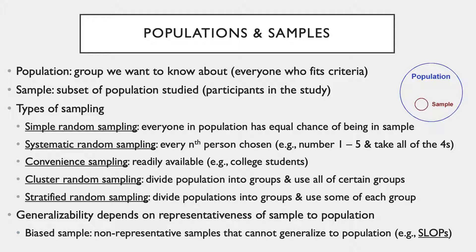Generalizability always depends on the representativeness of a sample to the wider population. A sample is generalizable only if it represents all members of the wider population, which is quite challenging to achieve. A representative sample is the term for a sample that represents the population of interest. In contrast, biased samples are non-representative and cannot generalize to the wider population.